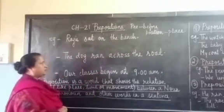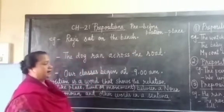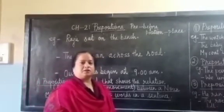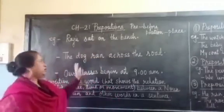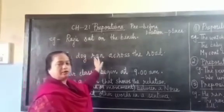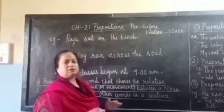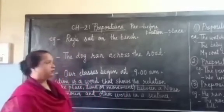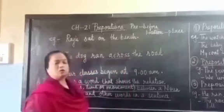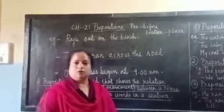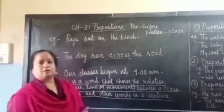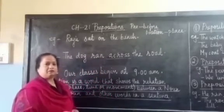Now let us have a look at the next one: The dog ran across the road. In this sentence, we are talking about the dog, and we know that the dog ran. But what is the movement of the dog? The movement of the dog is 'across' — so he ran across the road. 'Across' is the preposition that tells us about the movement of the dog.